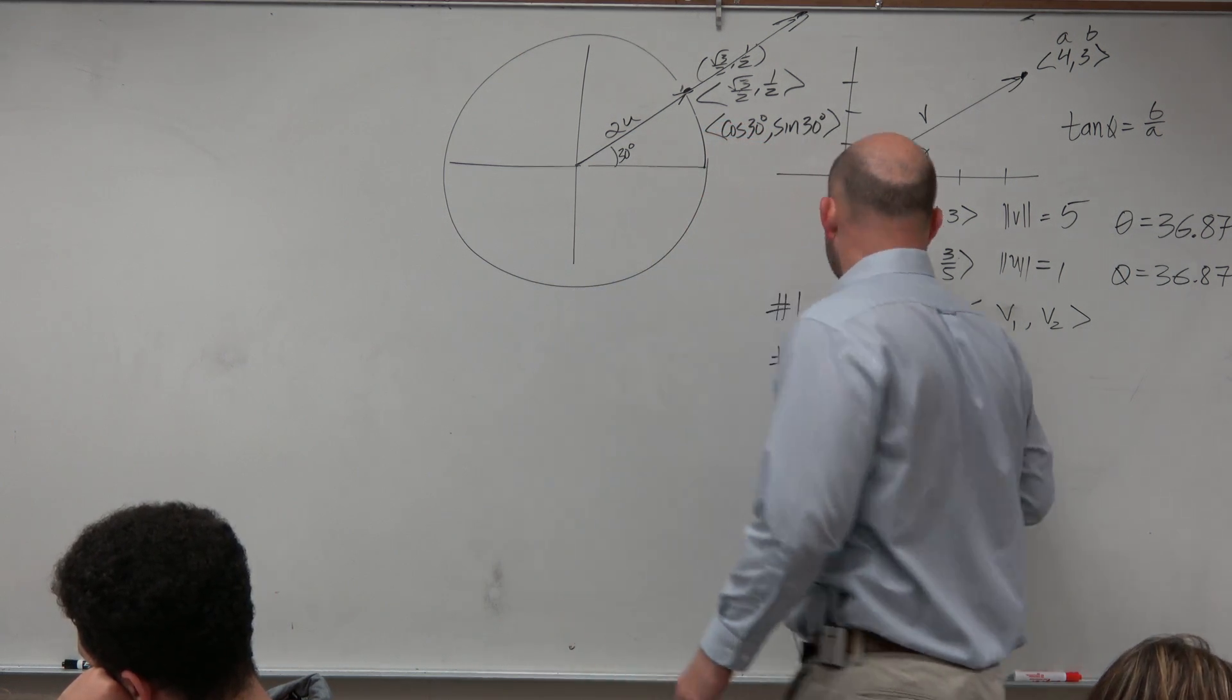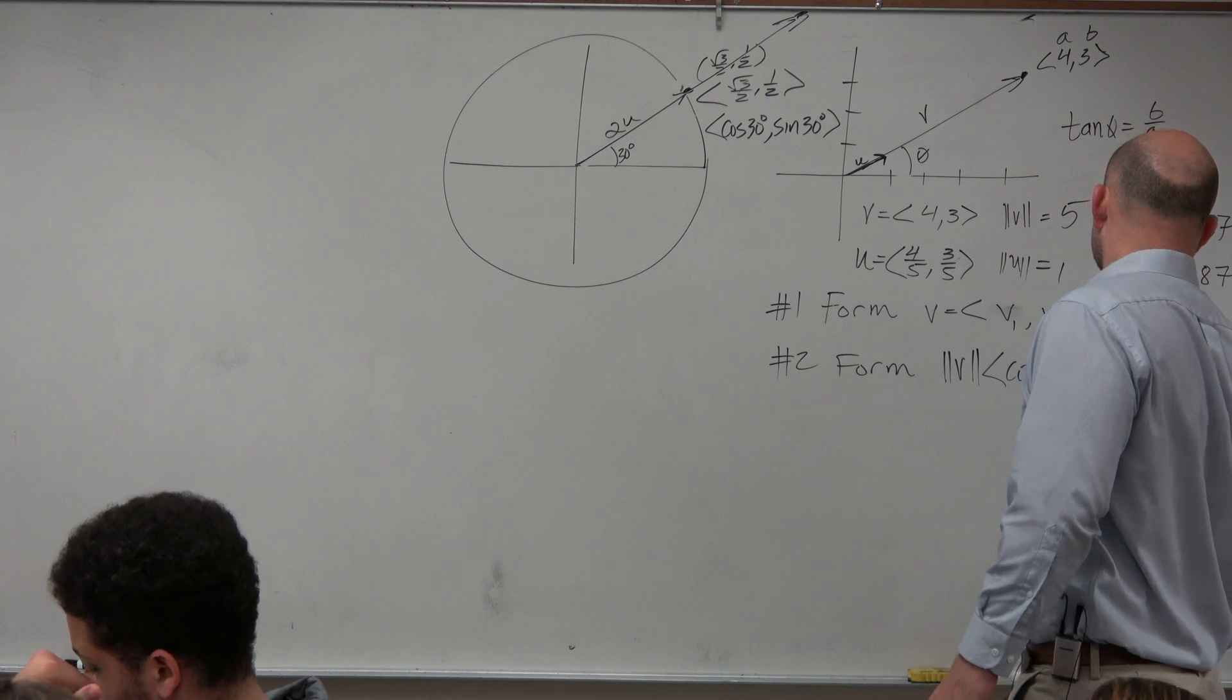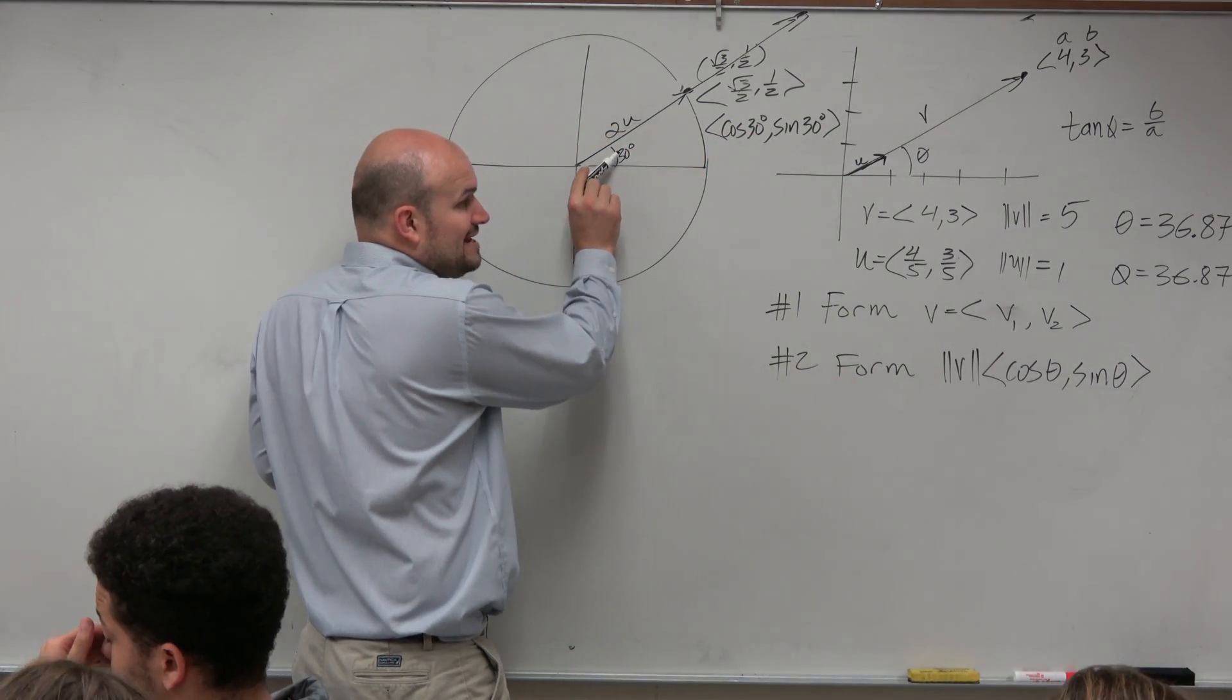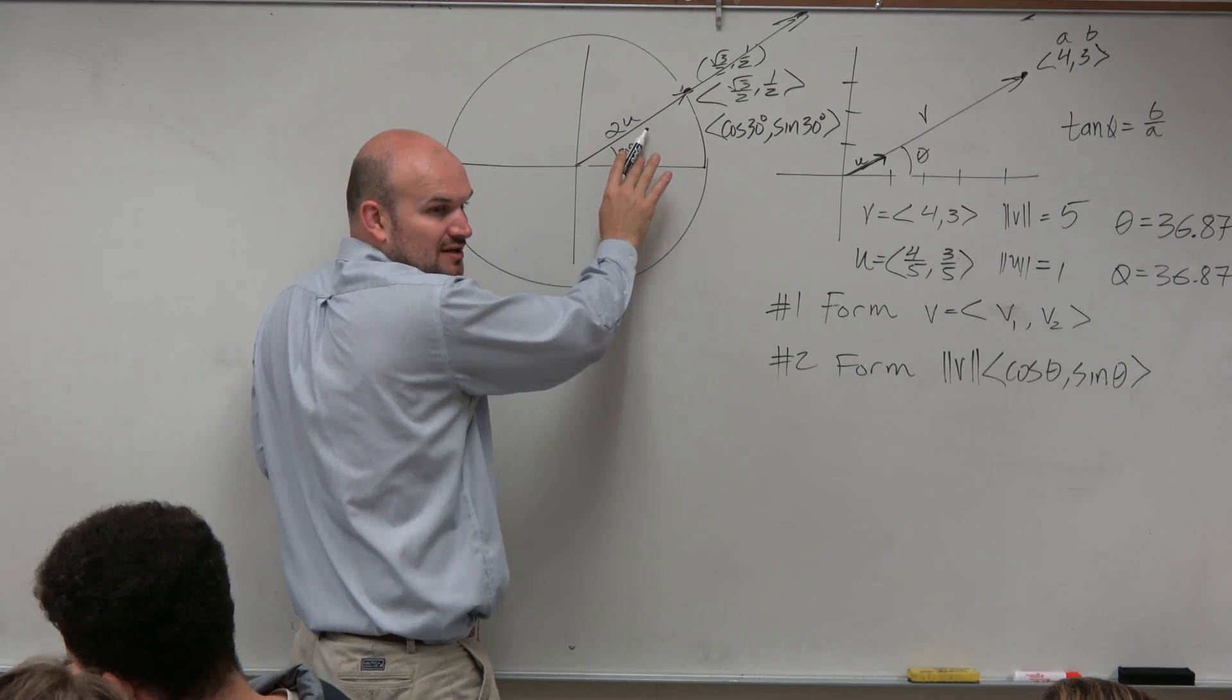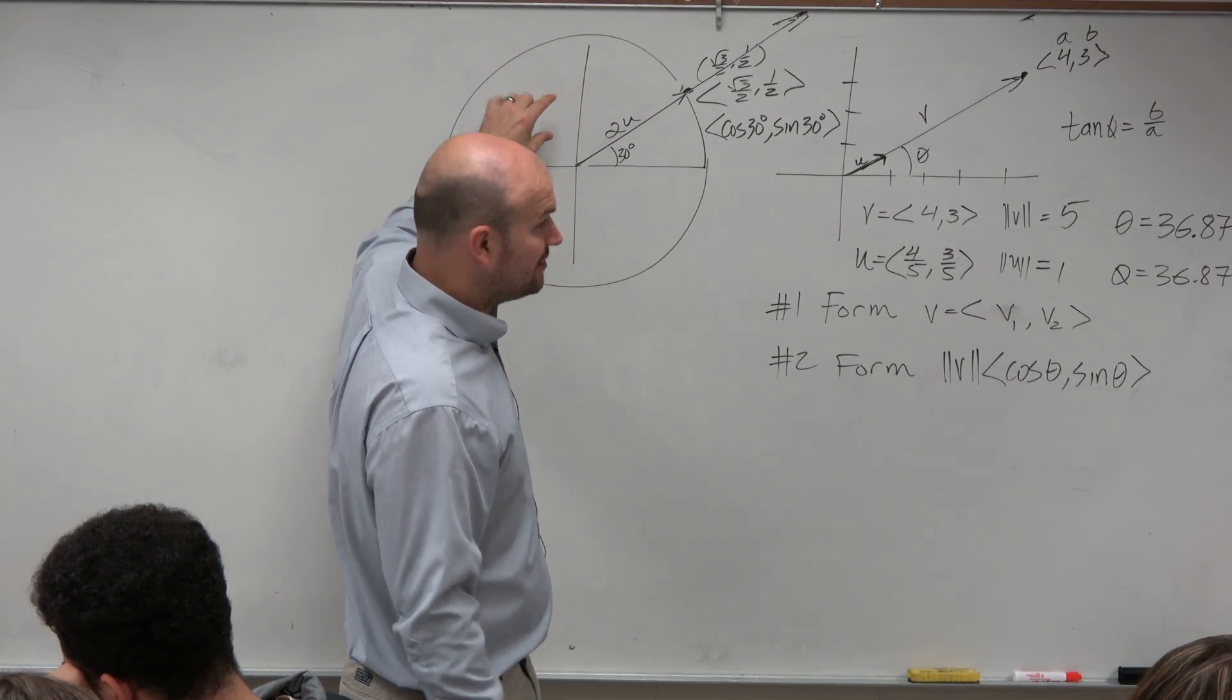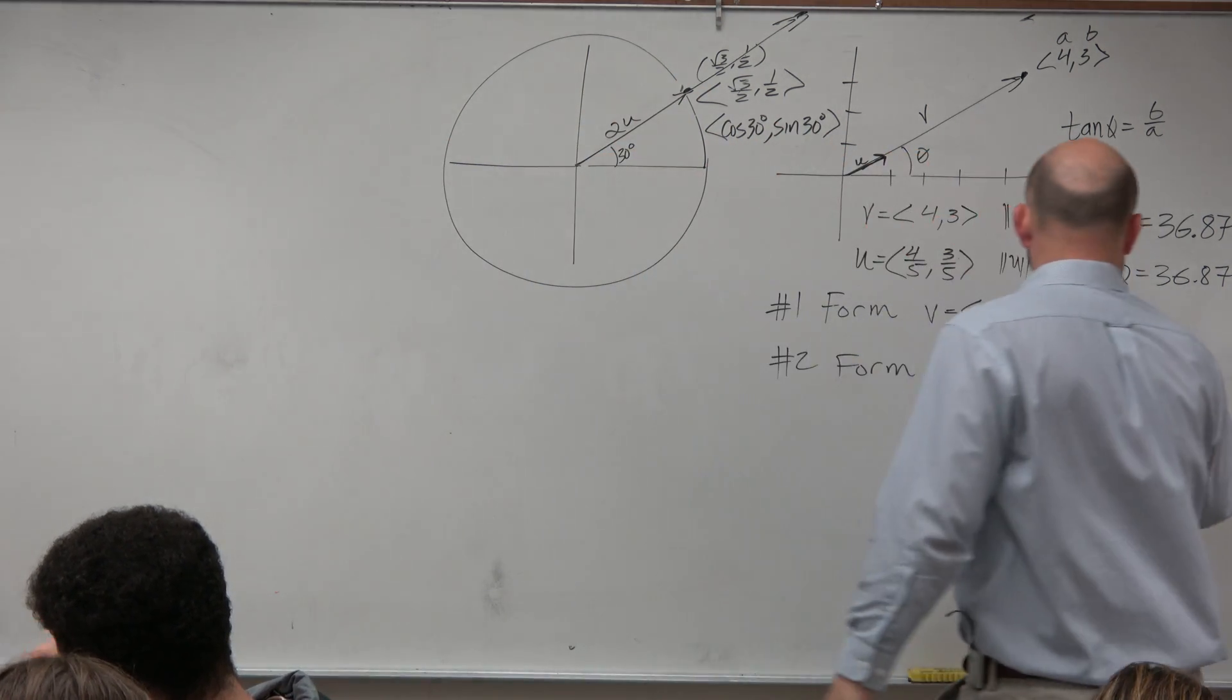So all it is, is that basically our knowledge of the unit circle says, if we know the angle, then we can create a vector on the unit circle. But the thing is, our vectors on the unit circle all have a magnitude of 1. And if we want a new magnitude, or whatever, like for instance, if we want our magnitude to be 5, then we just multiply our vector by a magnitude of 5.